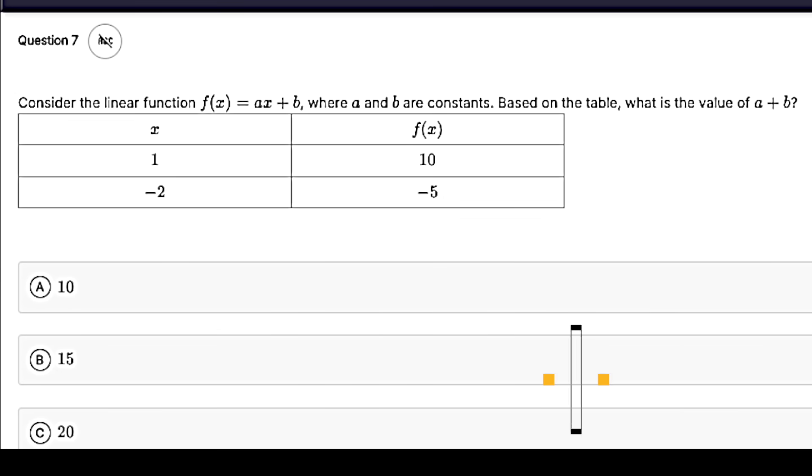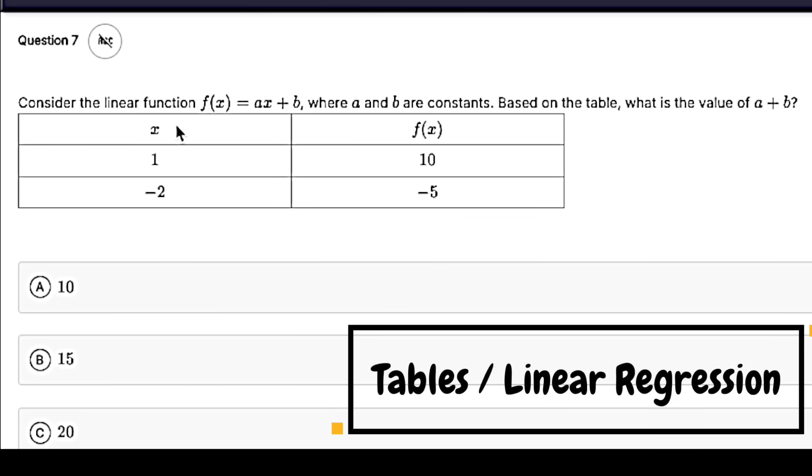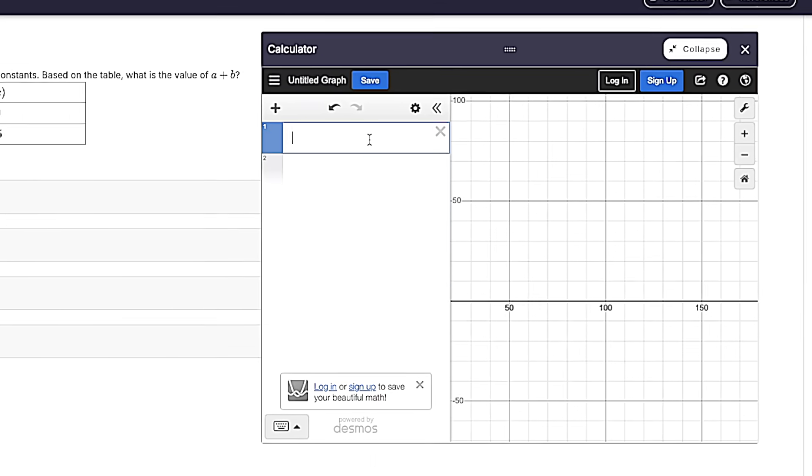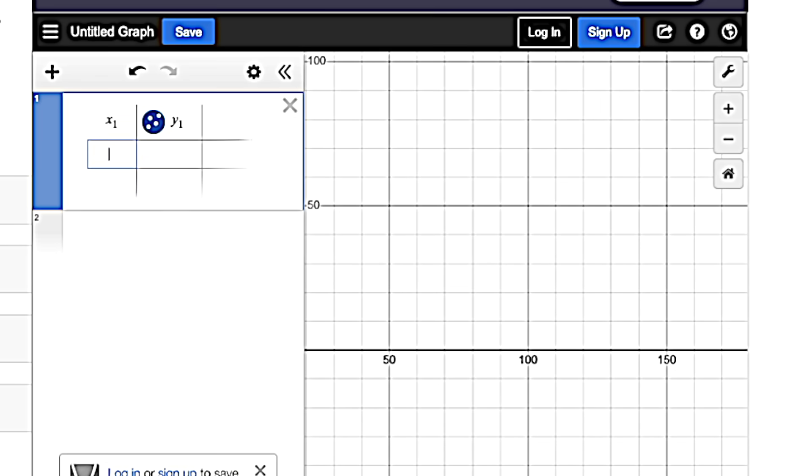Next up, we've got tables and linear regression. If you are given a table, you can easily put that into Desmos by writing the word table. And then putting in your x's and y's. When you do this, a little guy is going to pop up over here.